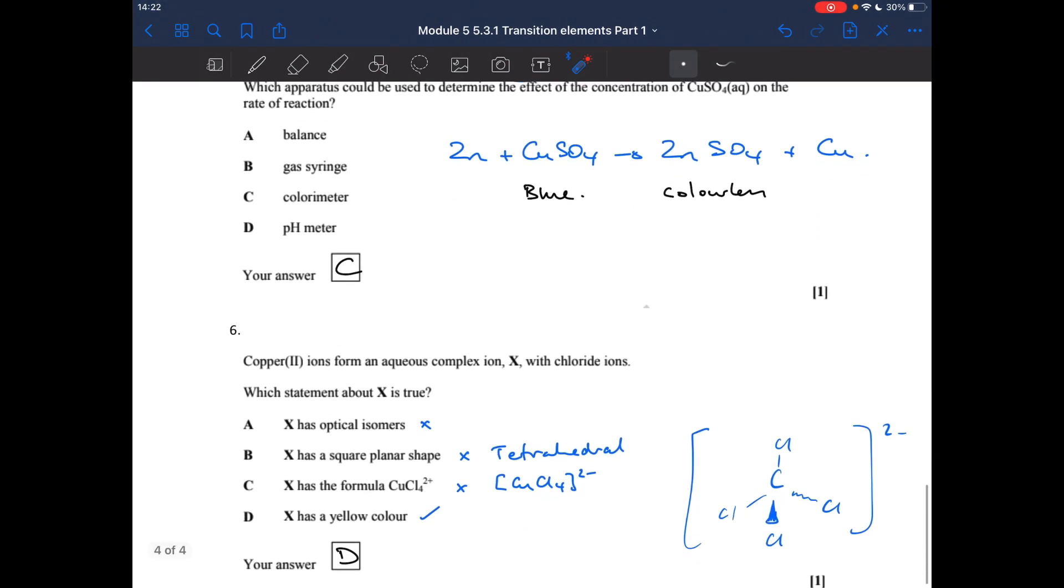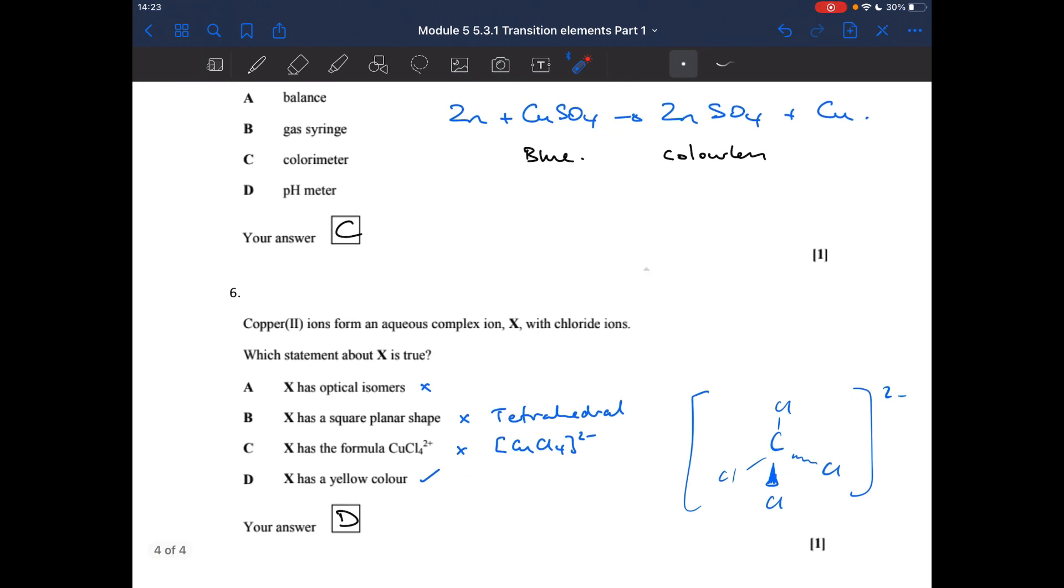And finally, question 6. Which statement about X is true? Has it got optical isomers? No, because the mirror image of the ion is superimposable on that, so it's not optical. Has it a square planar shape? No, it doesn't. It's tetrahedral. It's got the formula CuCl4 2 plus? No, it doesn't. It's a 2 minus charge because each of those chloride ions is 1 minus. So when you put that against the 2 plus, you're left with 2 minus. Has it got a yellow colour? Yes, it has. We've already mentioned that in a previous question. CuCl4 2 minus in its pure form is yellow, but it often looks green when it's in with aqueous Cu2 plus.